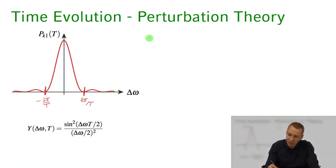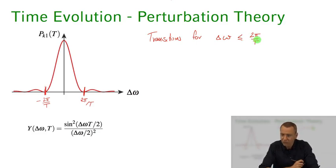So that means we can have transitions for delta omega smaller than 2π over T, for detunings or magnitudes of the detuning smaller than 2π over T, which means that delta omega times T should be greater or equal than 2π. If I multiply this by h-bar, I get delta E times T larger or equal than H.